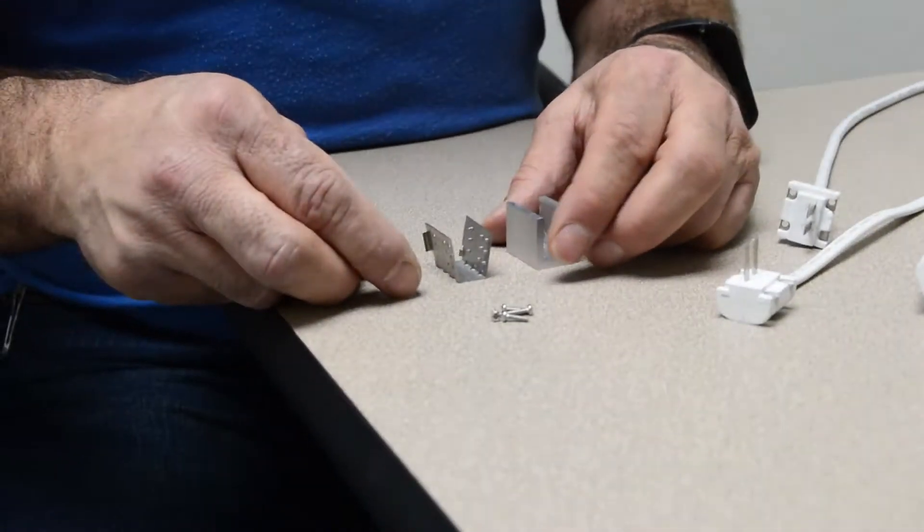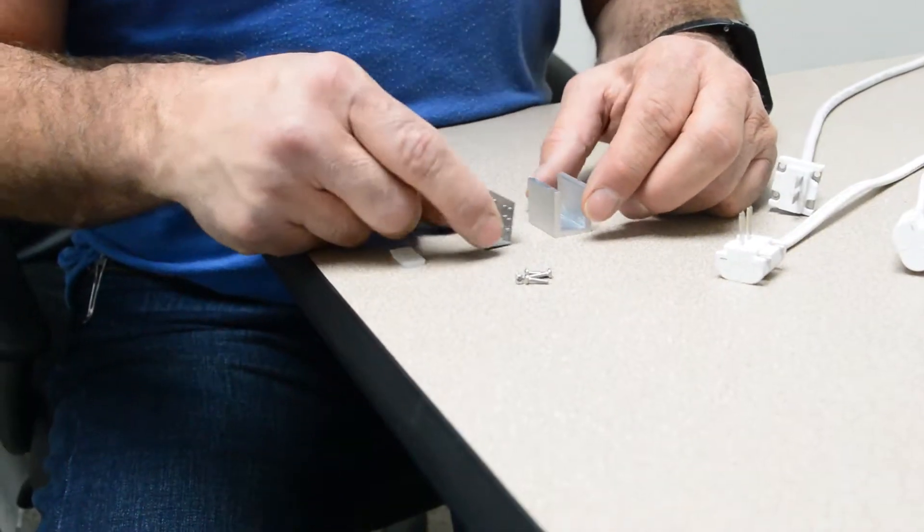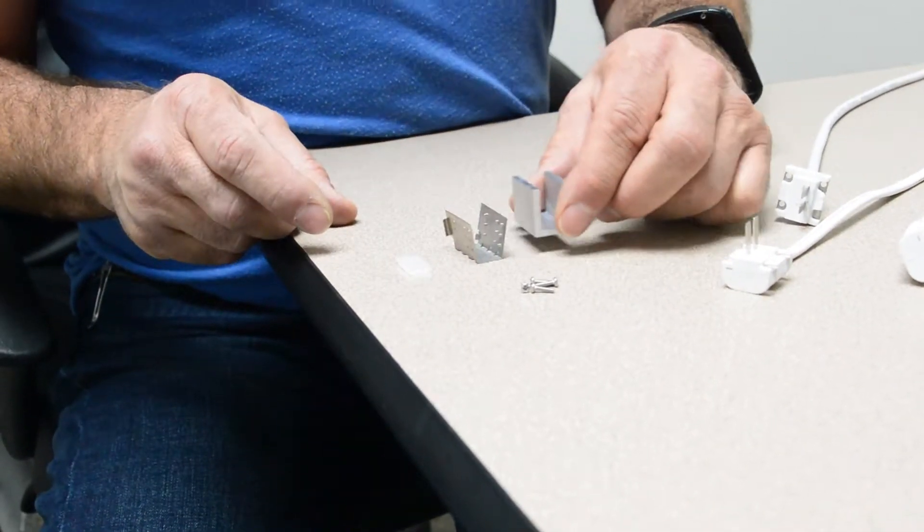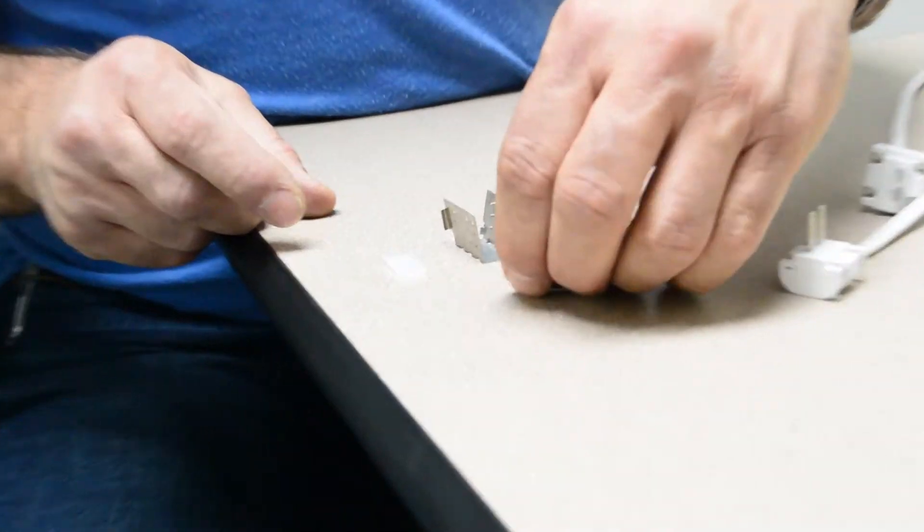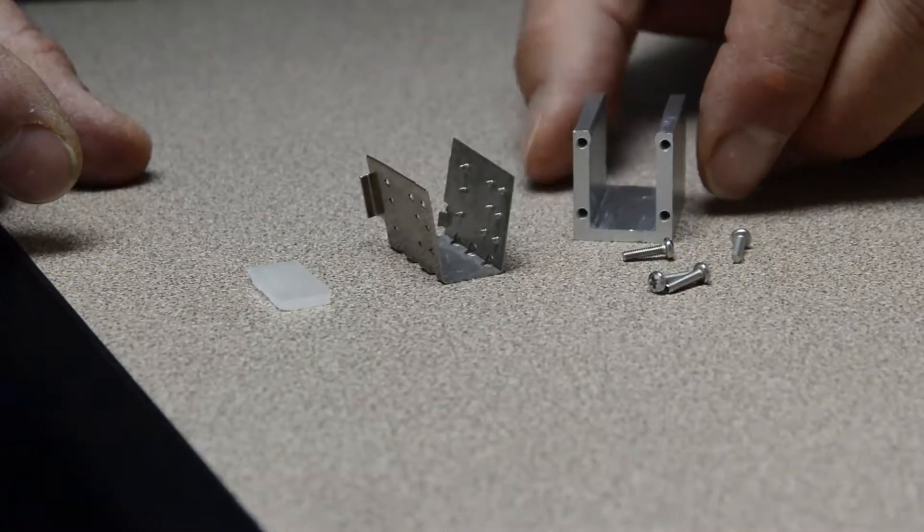Each of the connectors comes with a silicone gasket, an anti-skid clip, and an aluminum block, along with four screws for attaching the aluminum block.